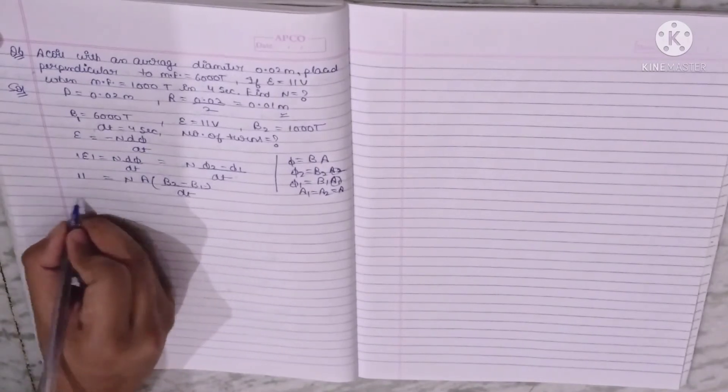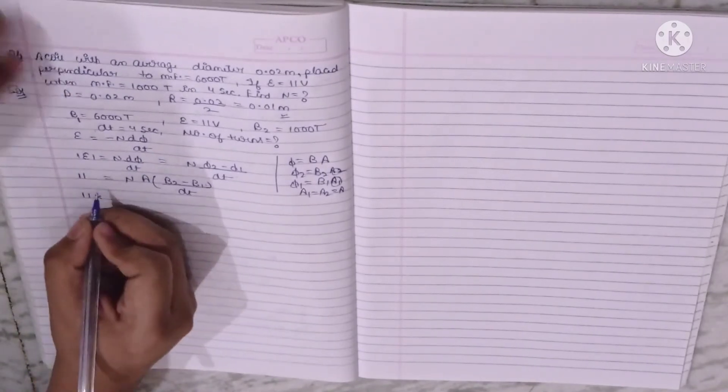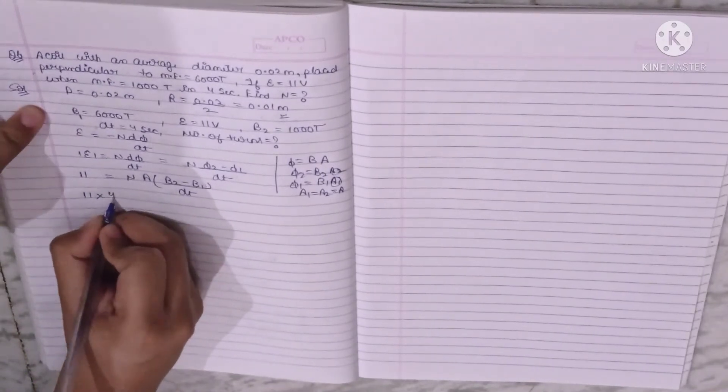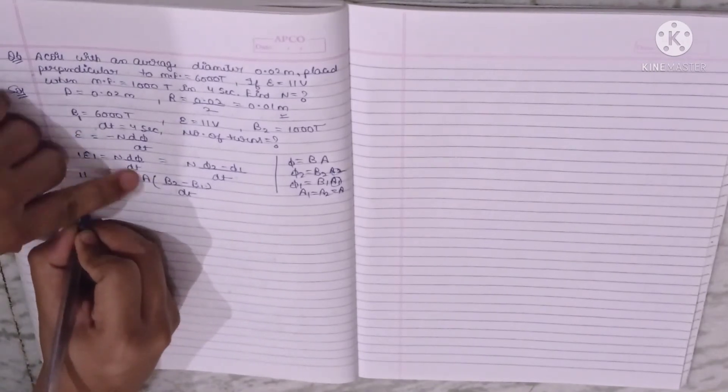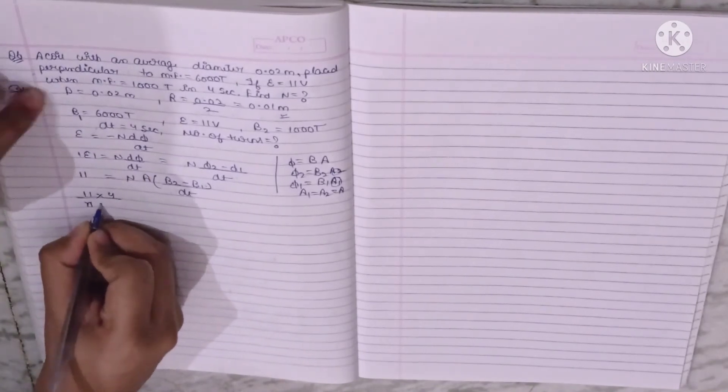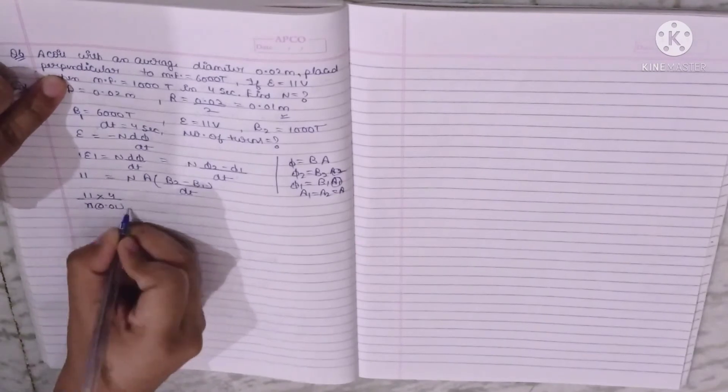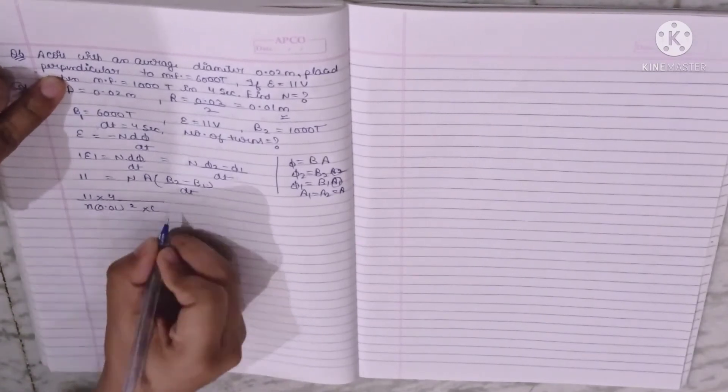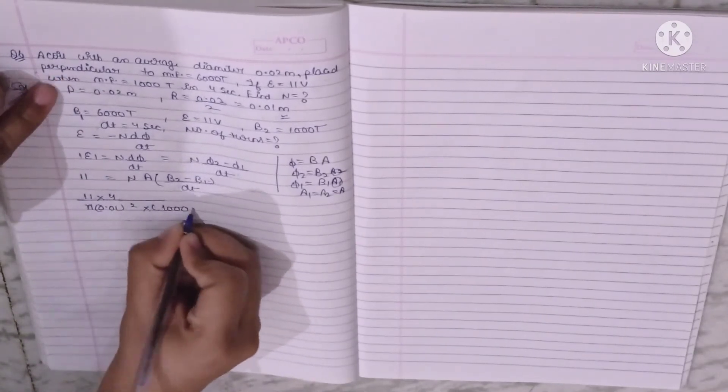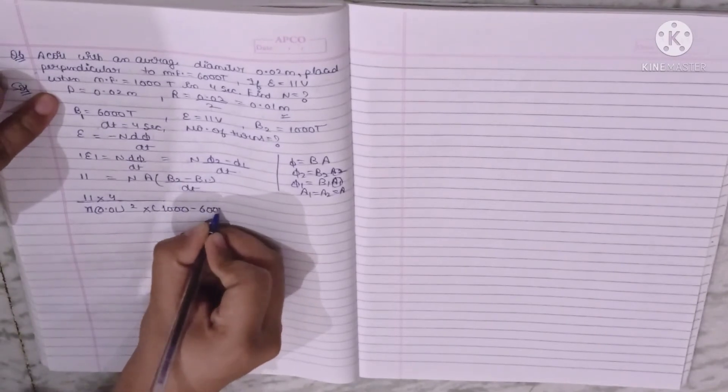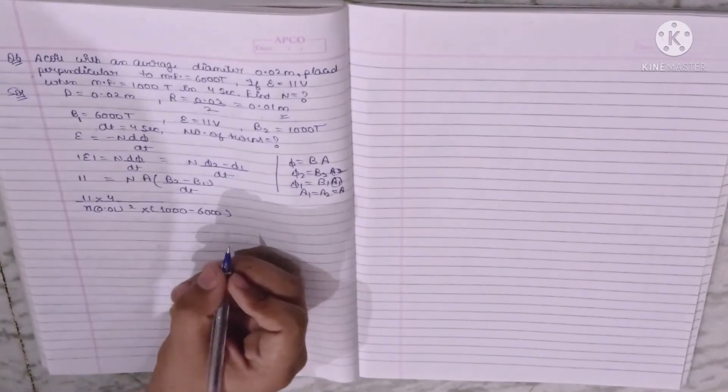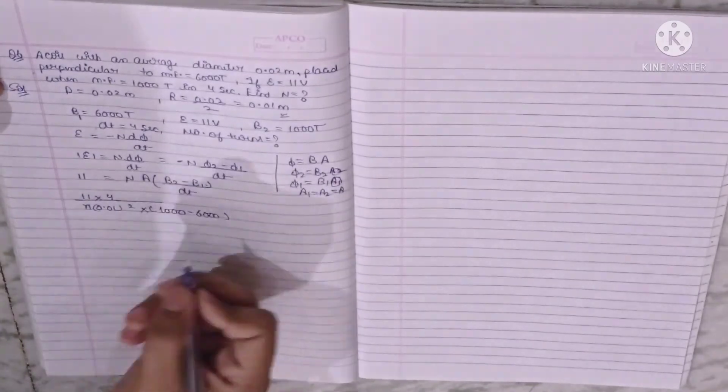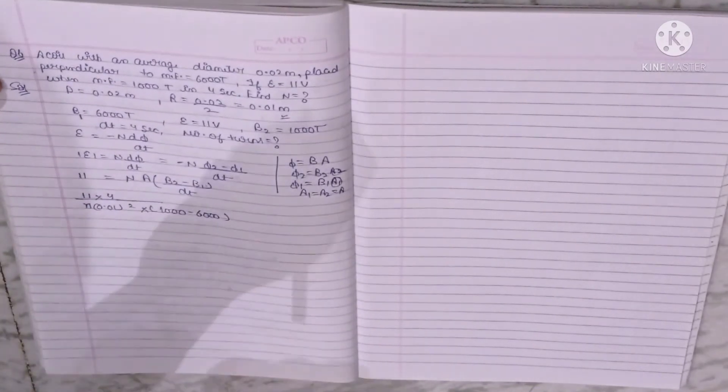When we put values, N into A upon dt. A is pi R square, pi R value is 0.01 whole square, into bracket B2 minus B1. 1000 minus 6000. If we put negative values, then the negative sign will make it positive.